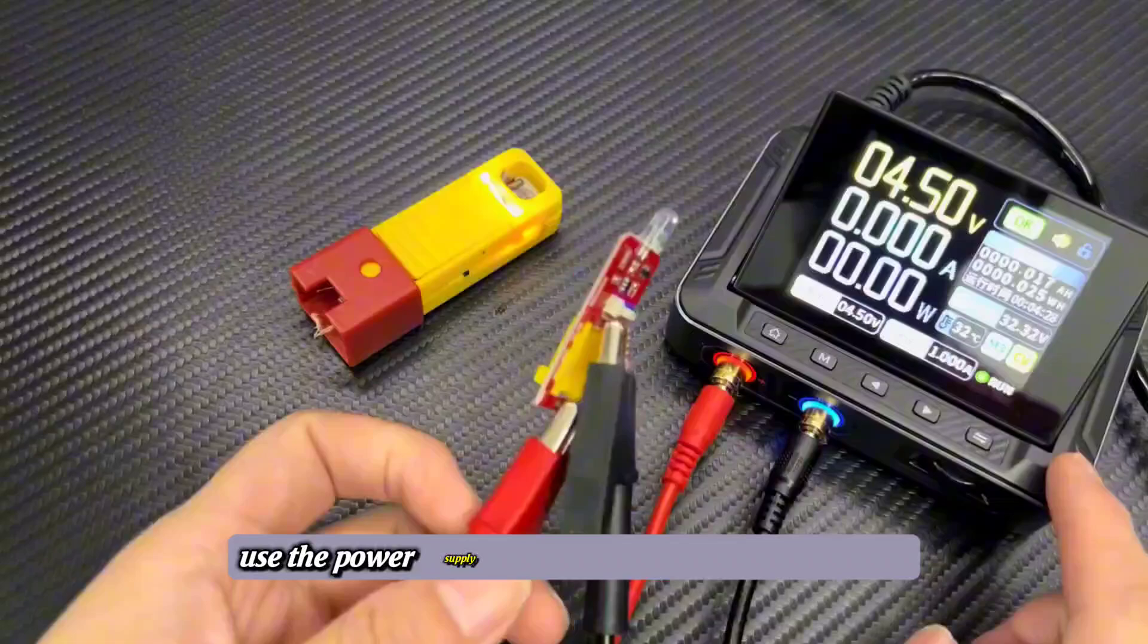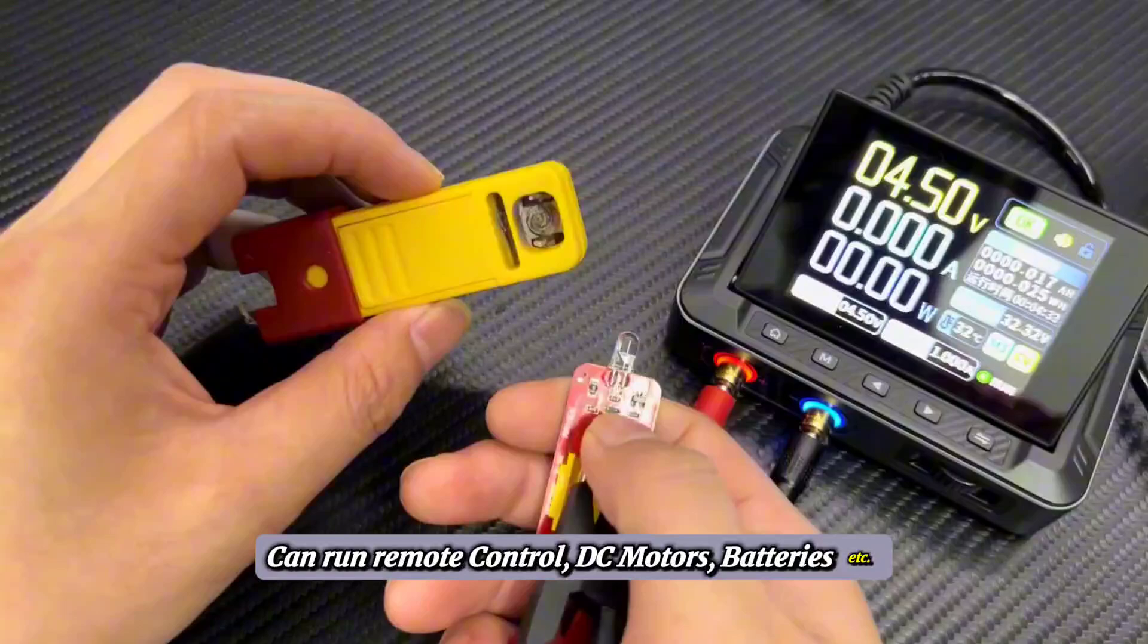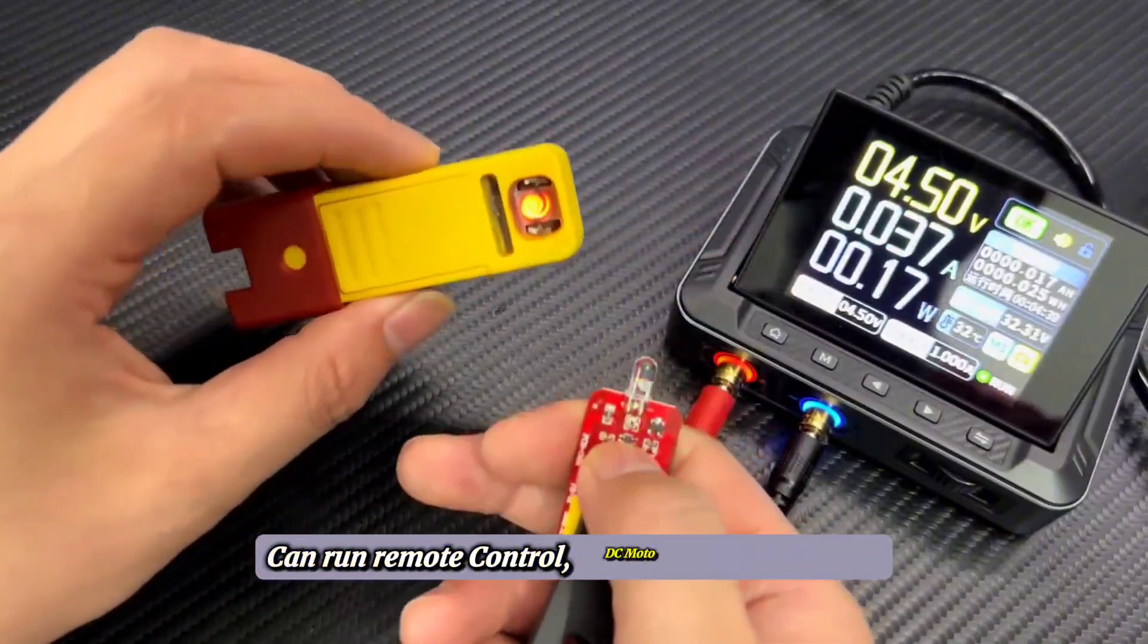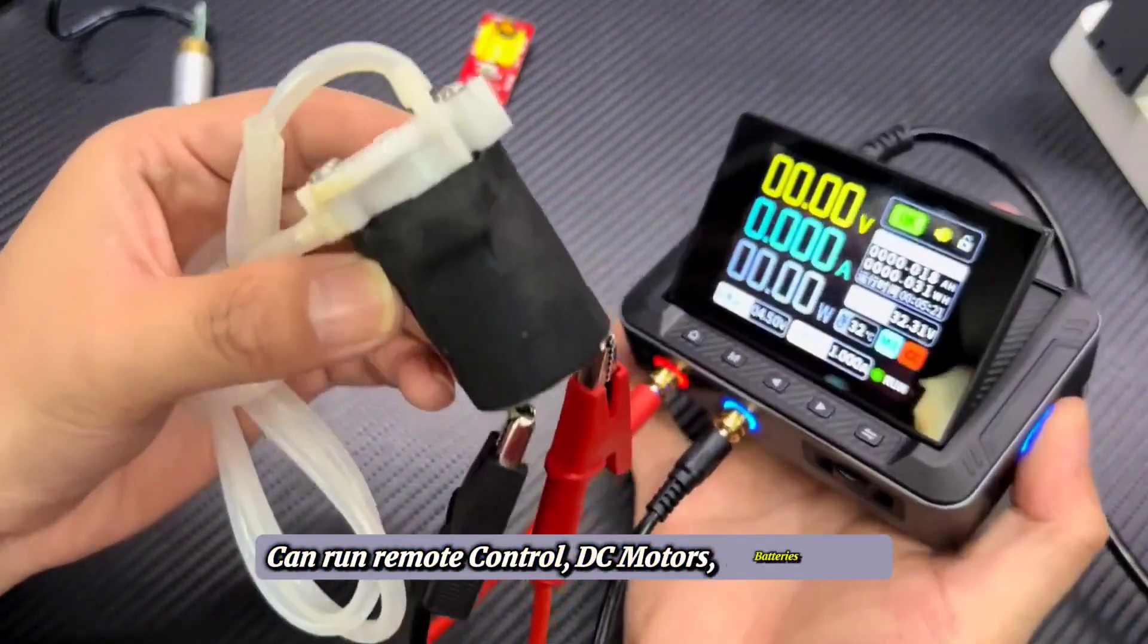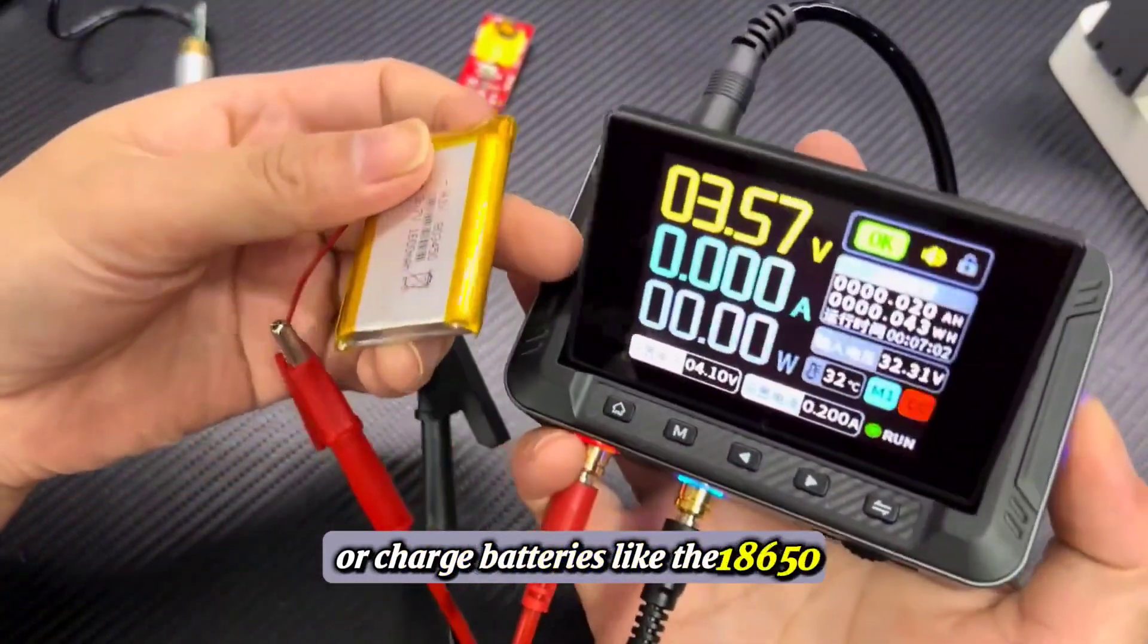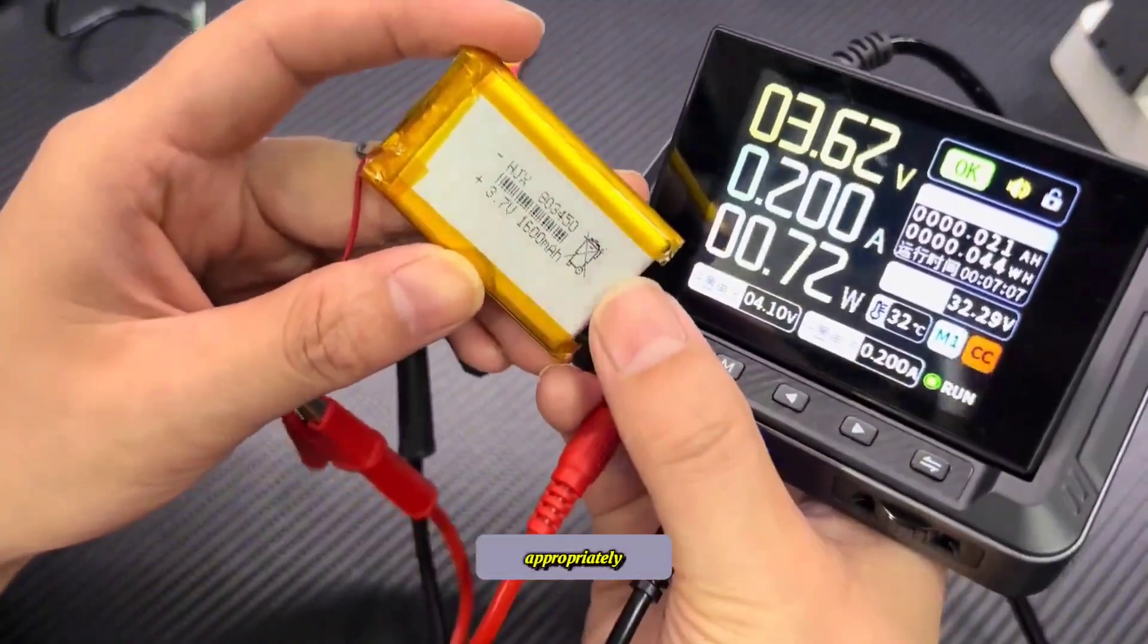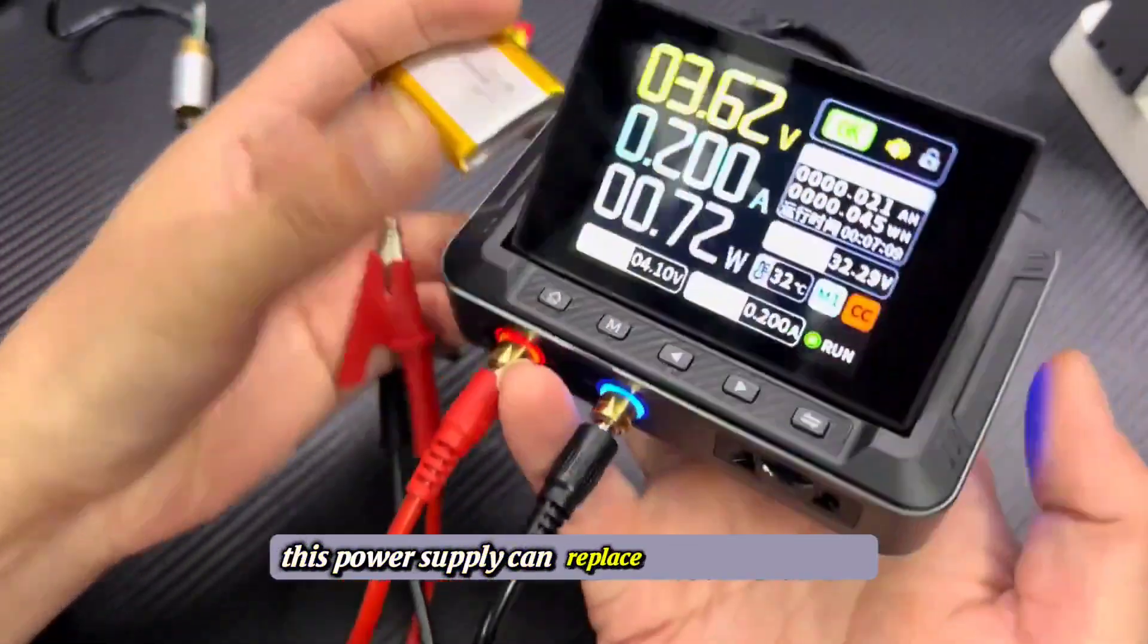You can also use the power supply to drive remote control modules or charge batteries like the 18650. Just make sure to set the voltage and current appropriately. This power supply can replace all your chargers.